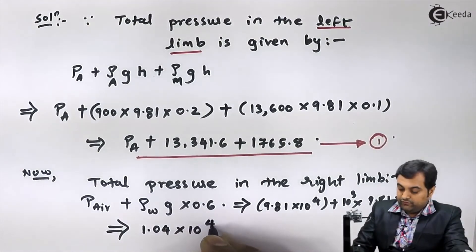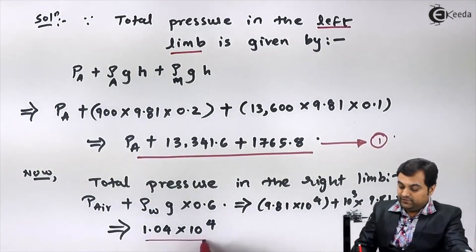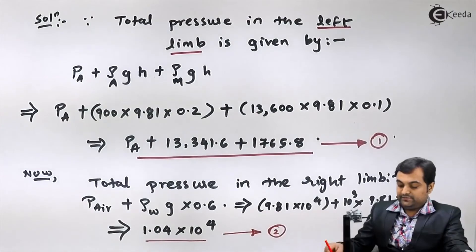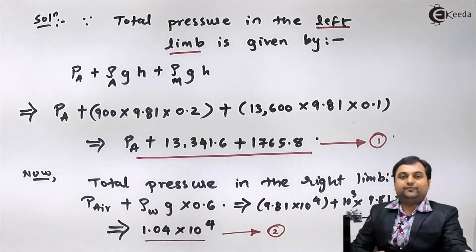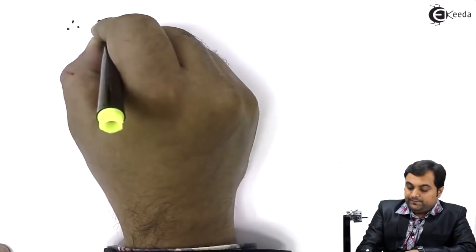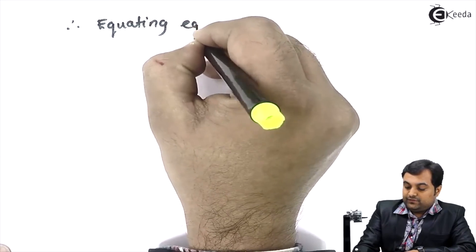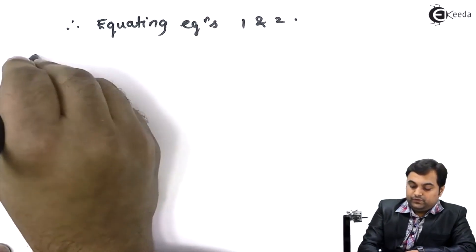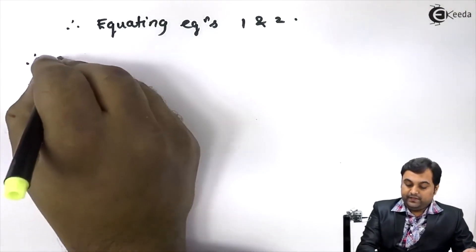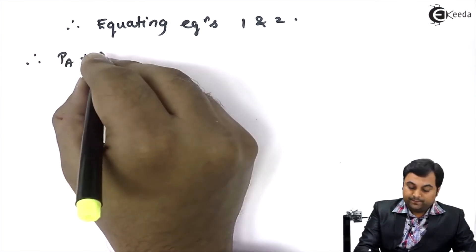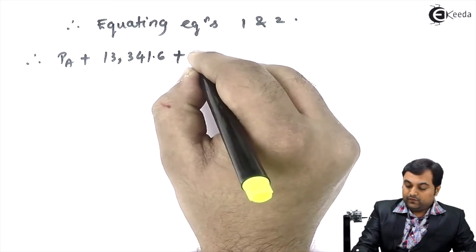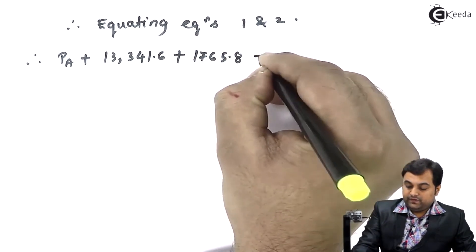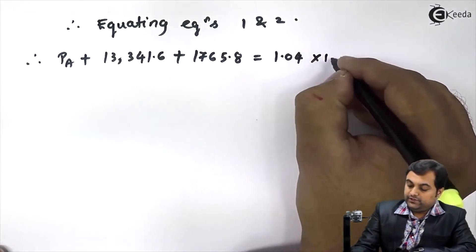Calculating the right limb total gives approximately 1.04 × 10⁴ N/m². This is equation number 2. Now equating equations 1 and 2: P_A + 13,341.6 + 1,765.8 = 1.04 × 10⁴.